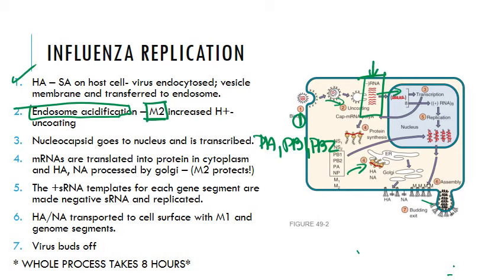All genomic segments are transcribed into mRNA for the individual protein segments, except for M1, M2, NS1, and NS2, which are differentially spliced into two different mRNAs. The mRNAs are then translated into protein back in the cytoplasm, utilizing the host ribosome caps that were stolen from the host mRNA.